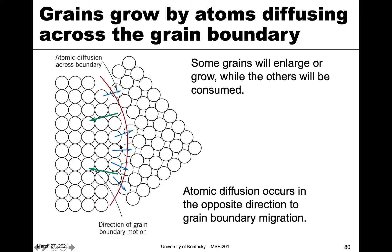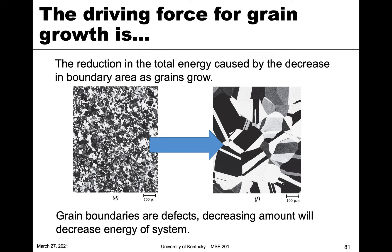It has to happen by diffusion. Diffusion is actually faster in the grain boundary, because we talked about how this area is looser — there's not as many atoms, there's a lot more empty space. So atomic motion is actually faster in the grain boundary than diffusion in the grain interior.